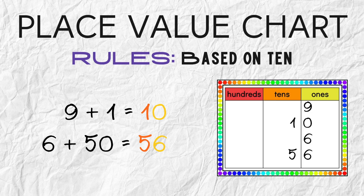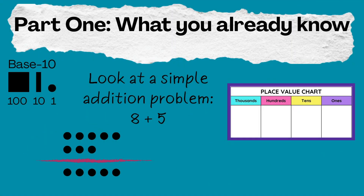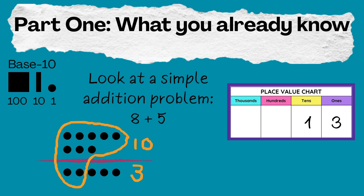The number 56 means I have five bundles of ten and six ones. Now look at this simple problem: eight plus five. First I have eight ones, and then I have five ones. I made one group of ten and that left three left over. So that one bundle of ten went into the tens place, and the three that were left over I placed in the ones place. So I have one bundle of ten and three ones, and that makes 13.